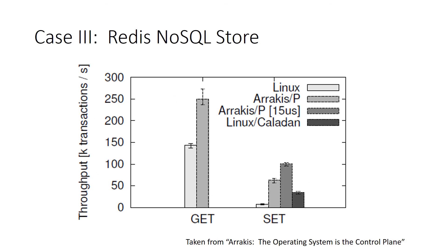For the NoSQL store — Redis — looking at gets and sets in terms of throughput, Arrakis really does well at the gets, and even the sets still significantly outperforms Linux.